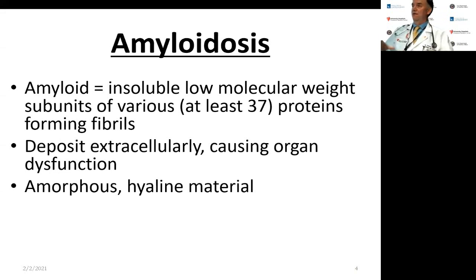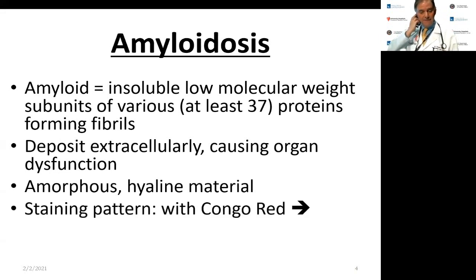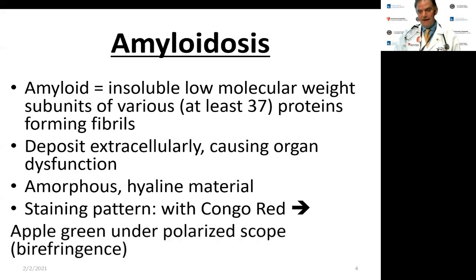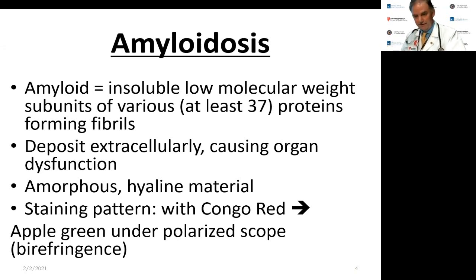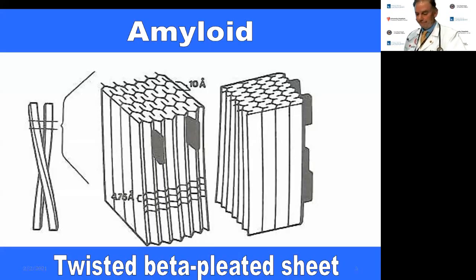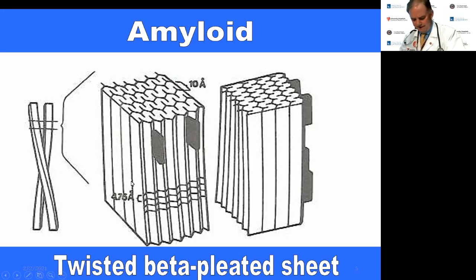On H&E biopsies, these look like amorphous hyaline material. By definition, with Congo red staining — Congo red being an old cotton wool dye — under a polarized scope the material turns apple green, which is a classic boards question. The structure of amyloid looks like a twisted beta-pleated sheet, which is very unique.